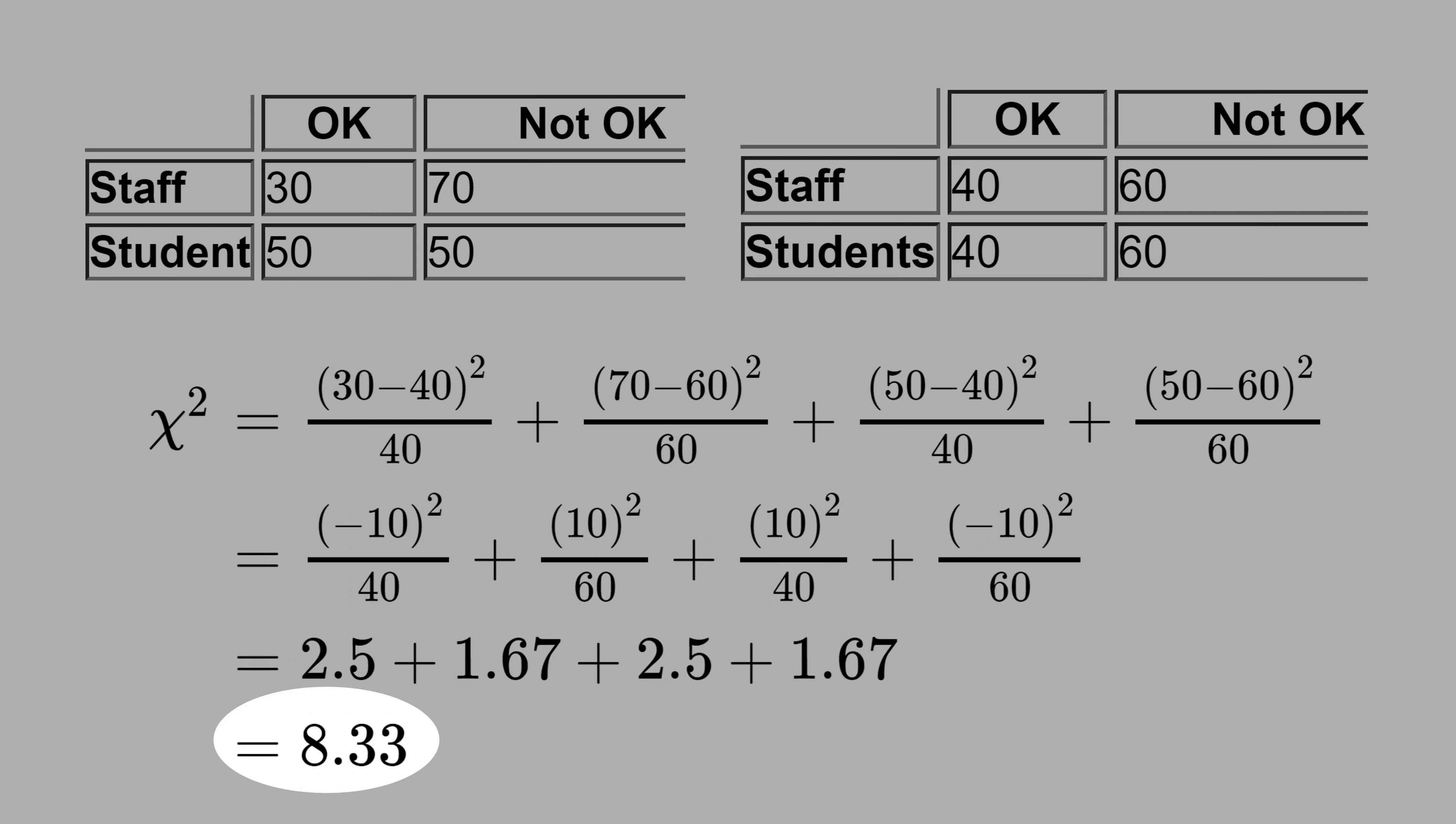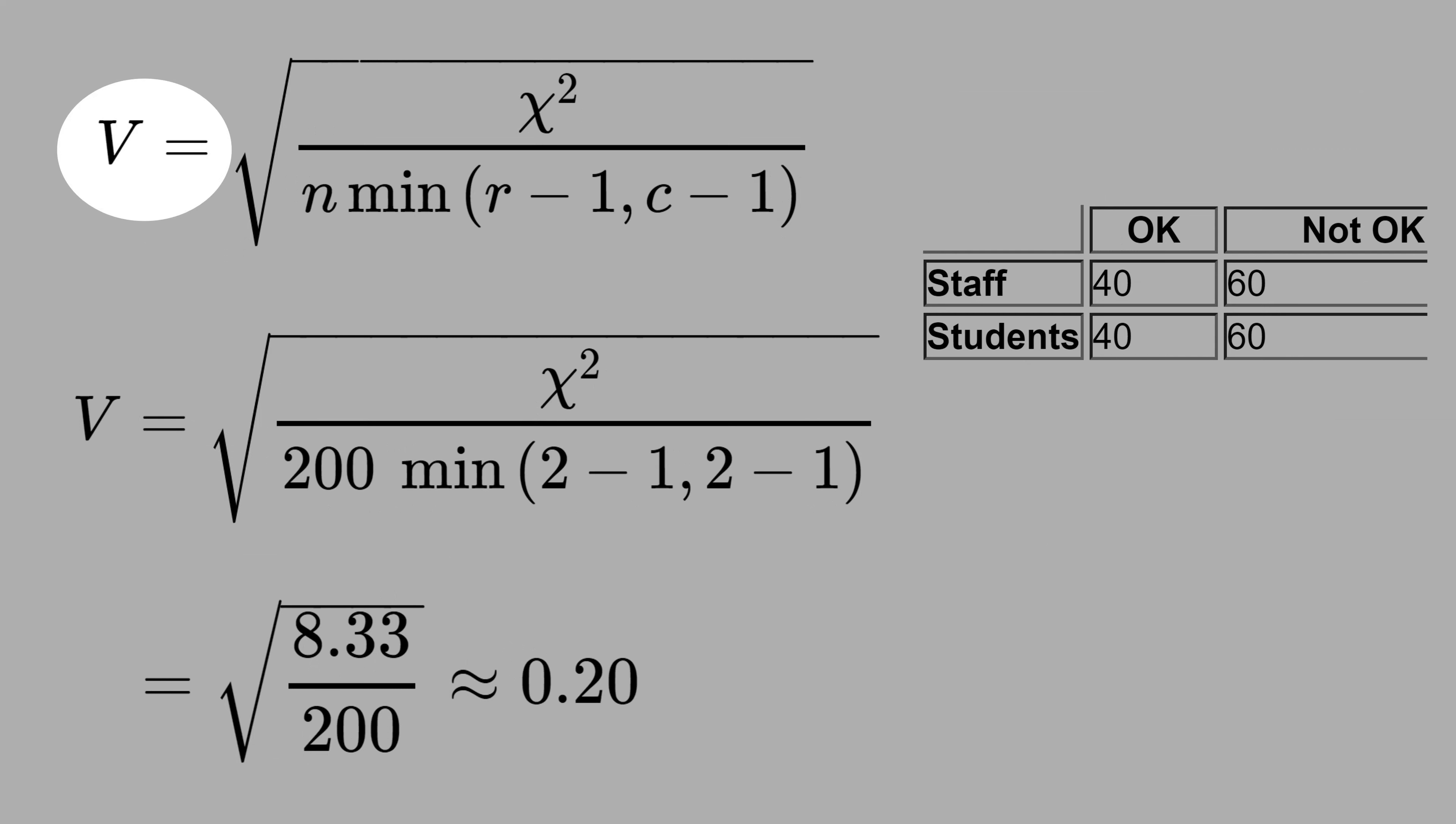This number is hard to interpret because chi-square can vary from zero to infinity. That's why we have the Cramer V.